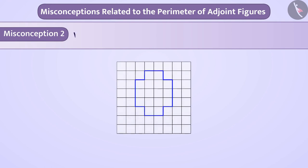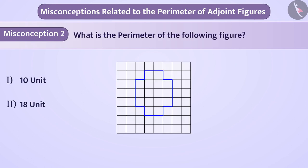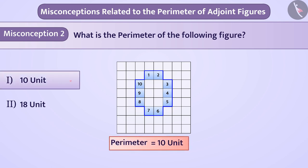Misconception 2. What is the perimeter of the following figure? This figure is drawn on the square paper. While calculating the perimeter, students often count the squares along the sides of the figure. This gives result as 10 units. So, they answer option 1 which is a misconception.